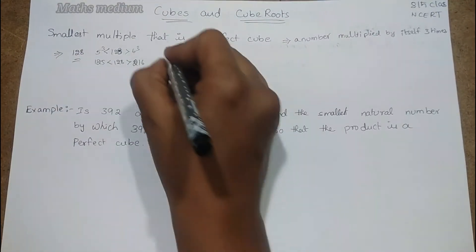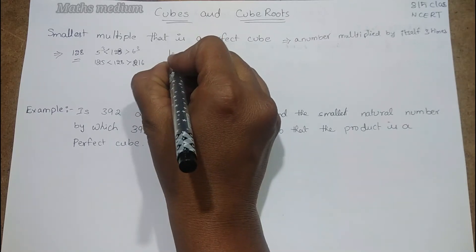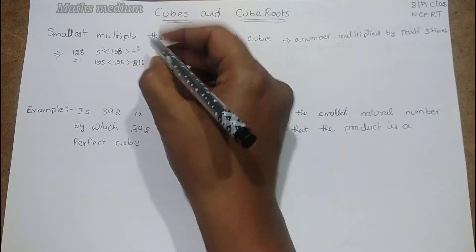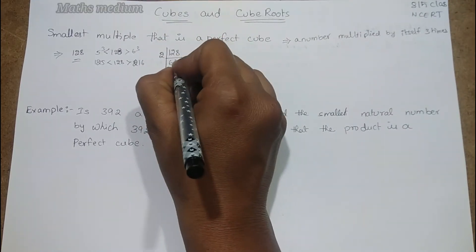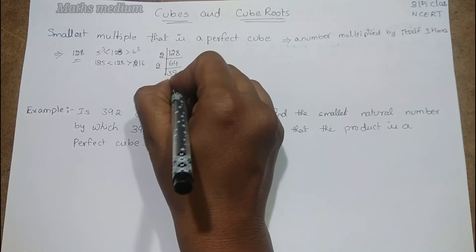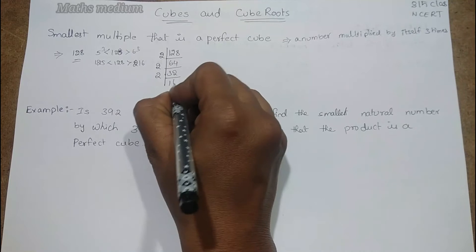But here we are going to find a perfect cube for that number. Let's make a prime factorization for 128. Divisible by 2: 2, 64; 2, 32; 2, 16; 2, 8; 2, 4; 2, 2; 1.